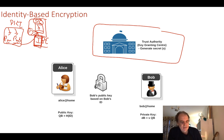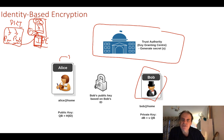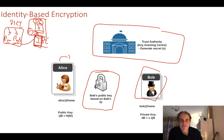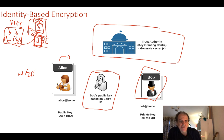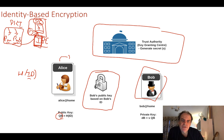With identity-based encryption, if Alice wants to send something to Bob, she uses something about Bob's identity. Rather than getting his digital certificate or public key, she generates something from Bob's identity to create the public key — typically by taking a hash of it, such as his email address. That hash becomes Bob's public key, and then Alice encrypts for Bob using it.